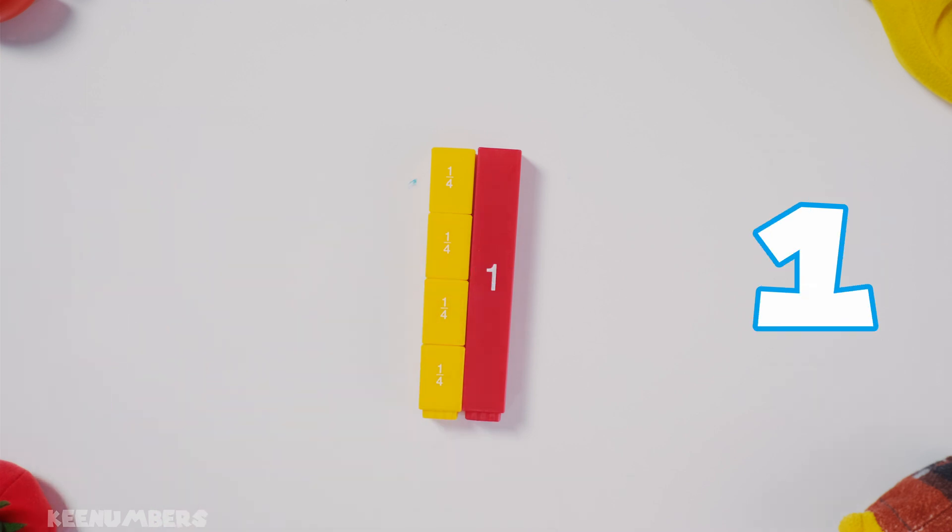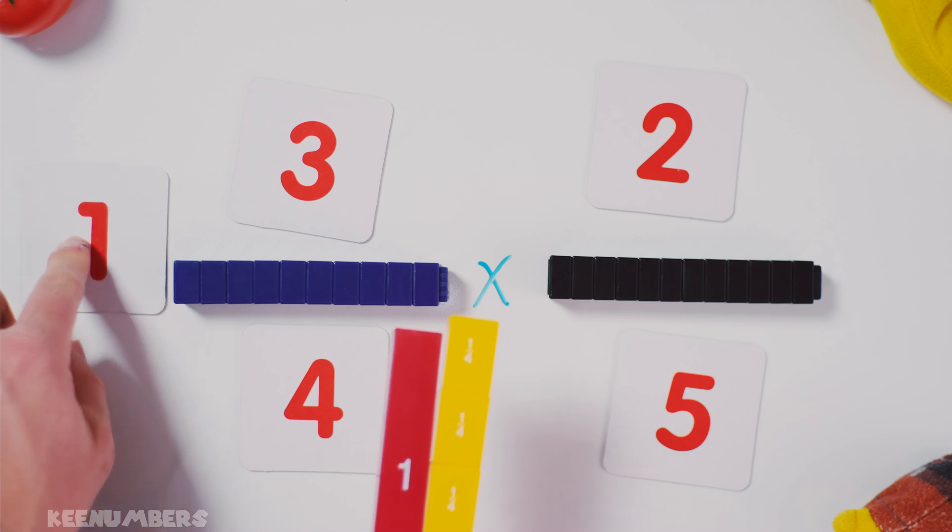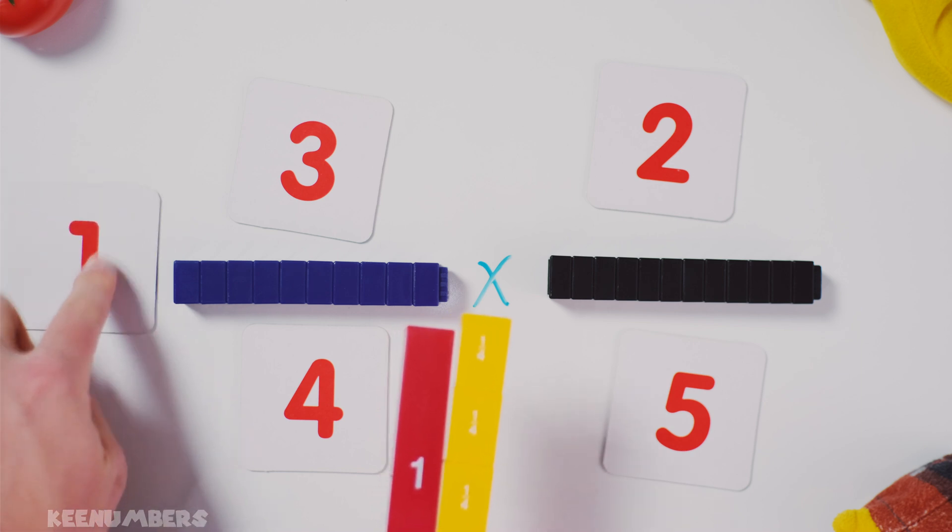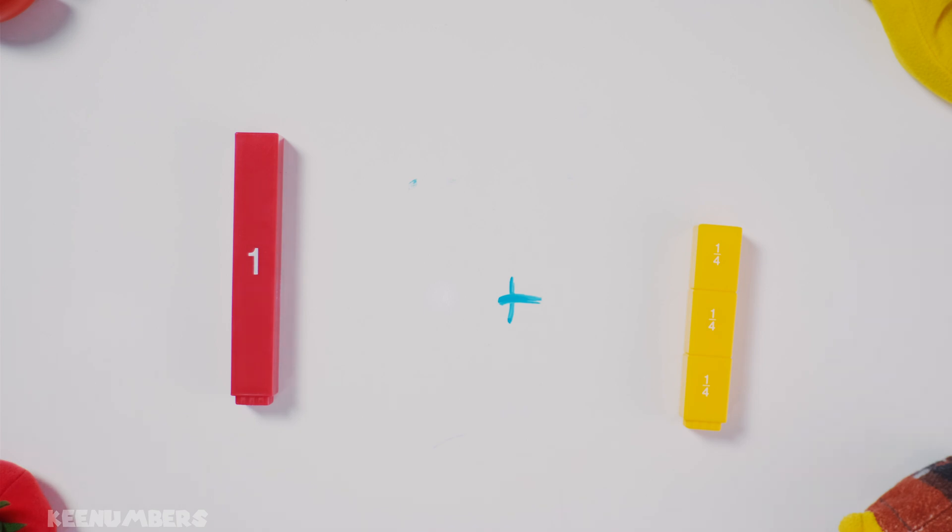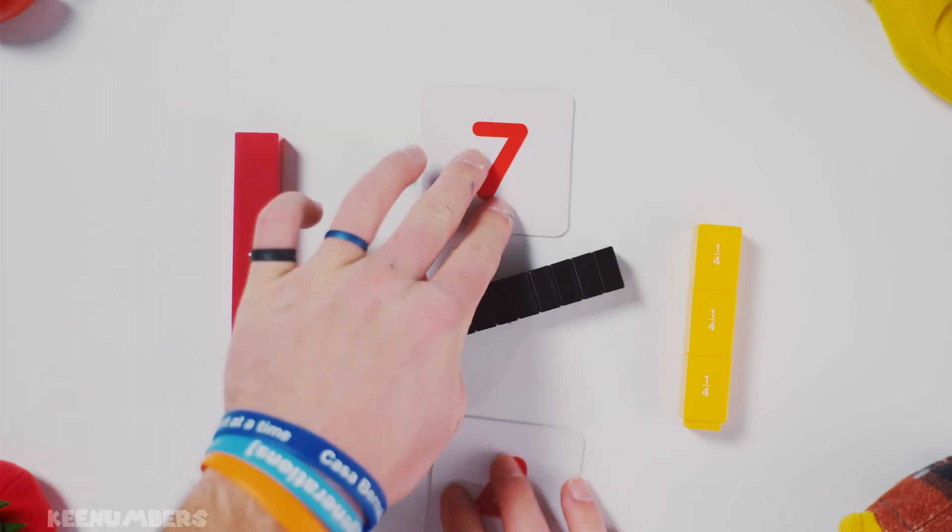So if there are four quarters in one, this is going to be four quarters plus three quarters. Four quarters plus three quarters. How many quarters is that? Seven quarters.